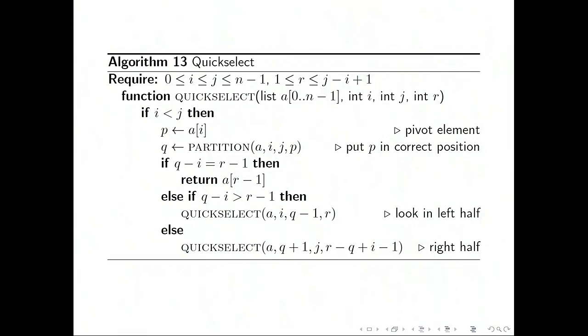So it's very similar to quicksort. As long as you have a non-trivial list to sort, you choose the pivot element, you put it in the right place, but then you don't need to do both recursive calls - you only have to do one of them, depending on where the element you're looking for actually lies. So if you get exactly the rth order statistic inside that sublist from i to j, then you just return it. You've found it - that worked out well.